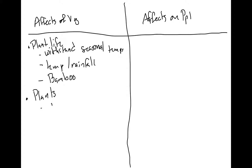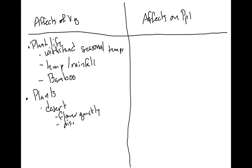If we look at the desert, yes, there are plants in the desert. They usually flower quickly — as soon as they get that drink of water, they're there, and then they disappear when it's hot and dry.